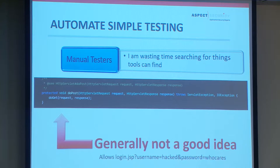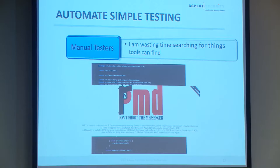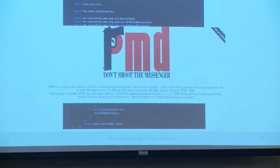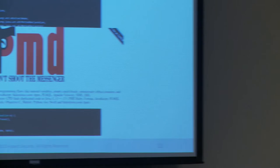So I wrote a PMD rule. PMD is a source code analyzer — it finds common programming flaws like unused variables, empty catch blocks, unnecessary object creation. Nothing security-related by default; it's a code quality tool. The benefit of writing a PMD rule is that your developers may already be using it in their development environment or CI pipeline. You can look for tools developers are already using, add some security benefit by writing a rule to detect security-relevant things.